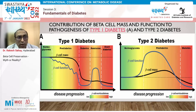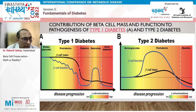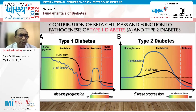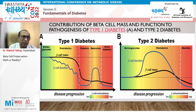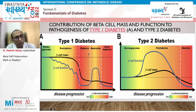We need to explore whether we can actually reverse the beta cell loss that happens in patients with diabetes. This slide gives us an idea about how type 1 diabetes develops over time. Even type 1 diabetes, generally assumed to be an acute event with diabetic ketoacidosis or severe osmotic symptoms, is preceded by a large period of pre-diabetes.